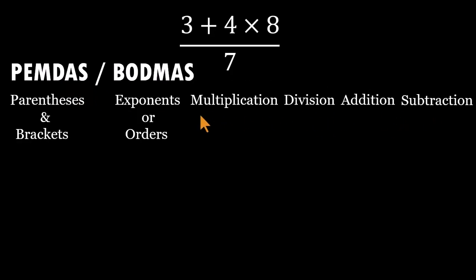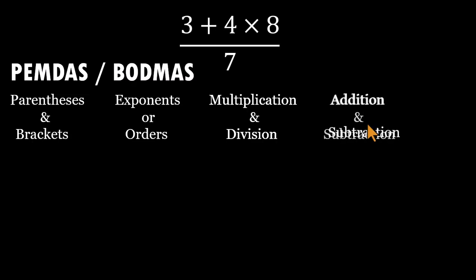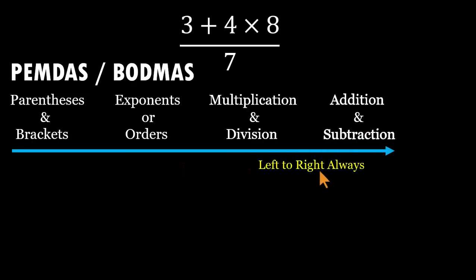But here's the part most people gloss over. Multiplication and division are partners, equal rank. Same for addition and subtraction, and we move through each pair from left to right.